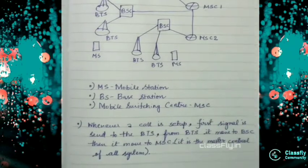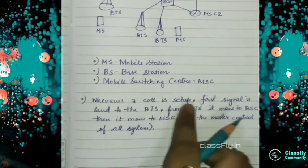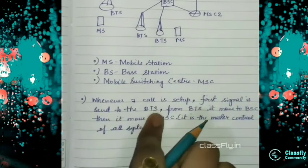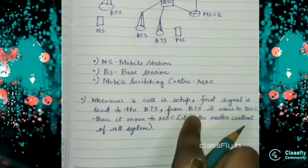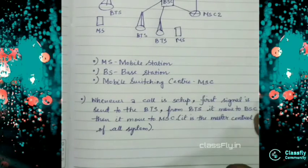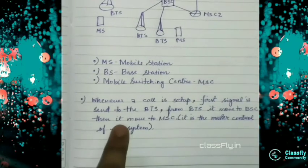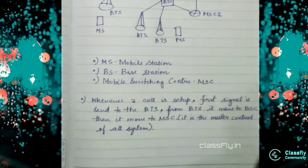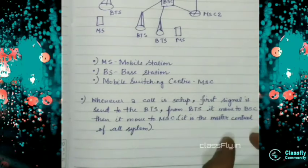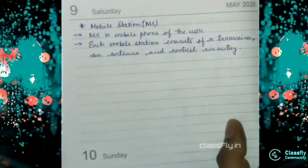So I have also written here that when a call is set up, first signal is sent to the BTS that is a base station. And from there it moves to the BSC that is a central base station. And then it moves to the MSC. Basically MSC is the master control of all the systems.